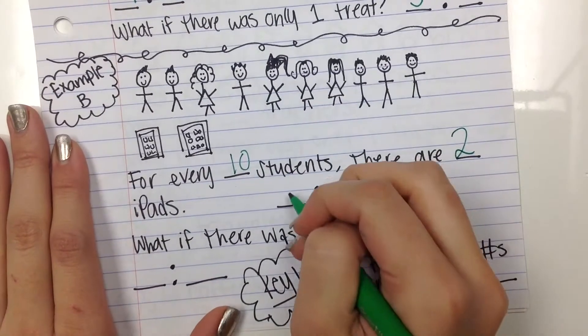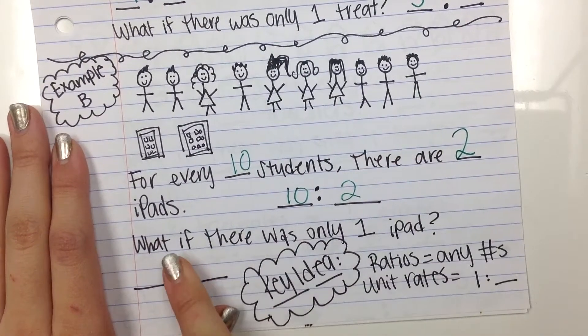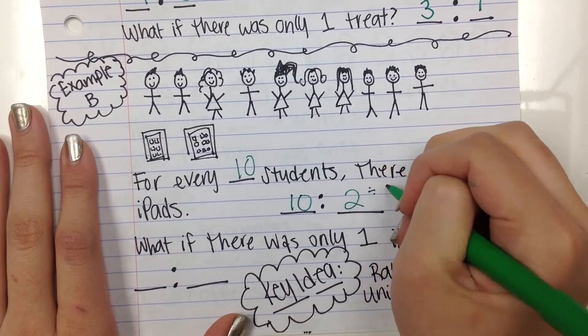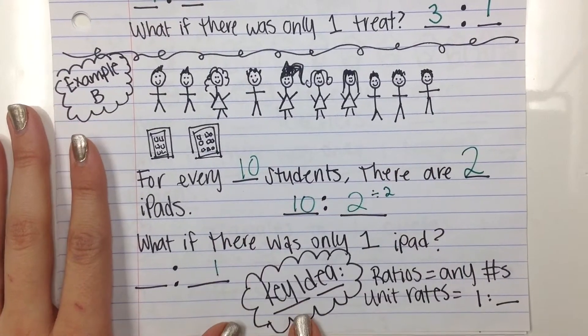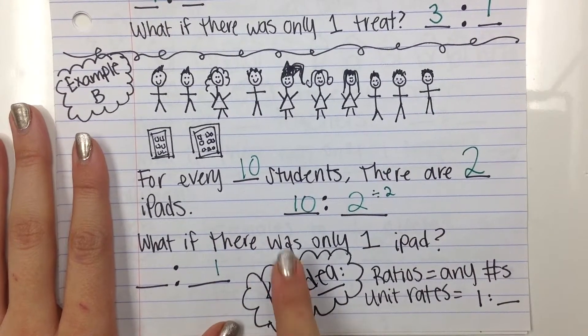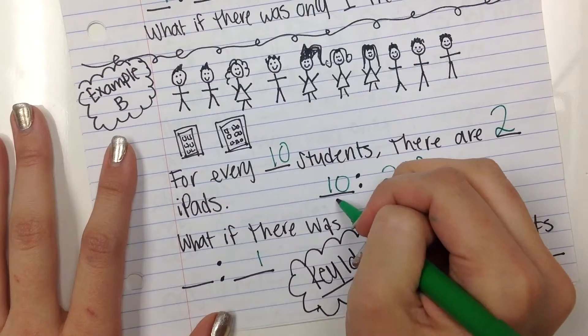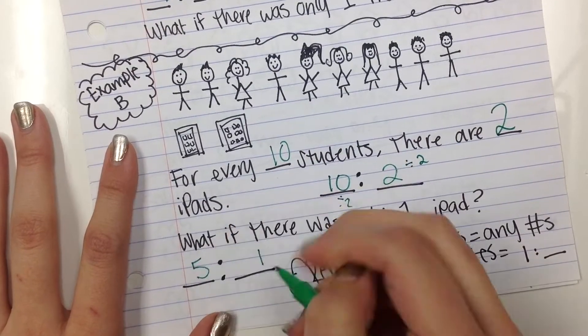So I can write this as ten to two. But what if there was only one iPad? I would divide by two to get one, and ten divided by two is five.